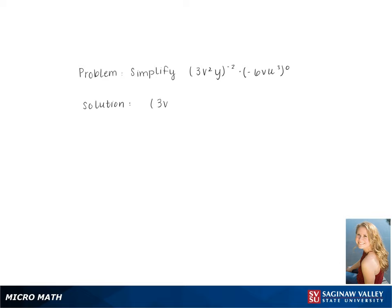To simplify 3v squared times y to the negative 2 times negative 6vu cubed to the zero power, we start by distributing the negative 2 to the coefficient and variables. Then we multiply by 1, because anything raised to the zero power is 1.